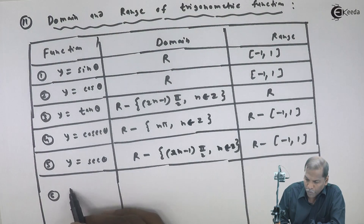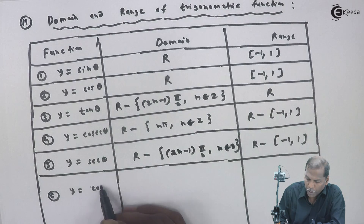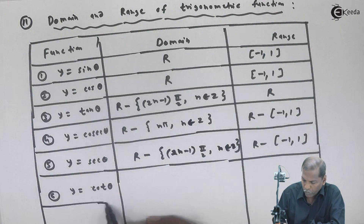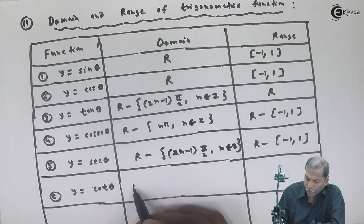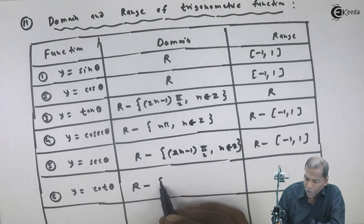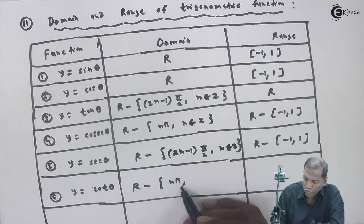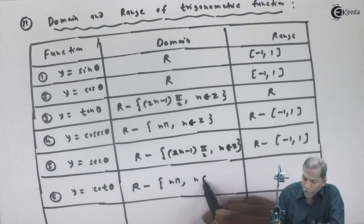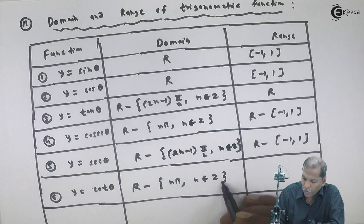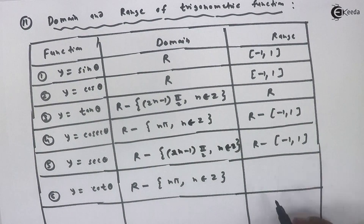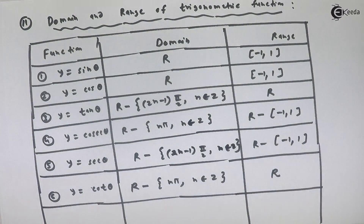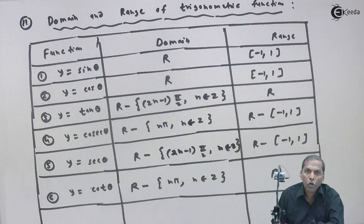The sixth function is y equal to cot theta. For cot theta, the domain is the set of real numbers minus n pi, where n belongs to the set of integers. The range is the set of all real numbers. This completes the chart of domain and range of trigonometric functions.